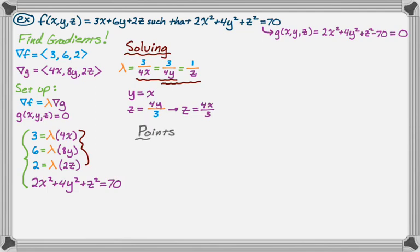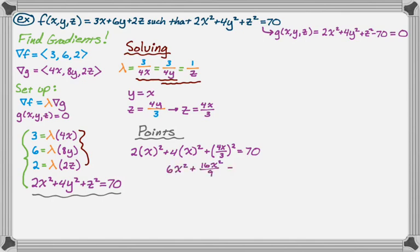Now I'm going to find my points. I have this constraint curve. It's 2x squared, and to deal with y I have 4x squared because y equals x. For z squared it's the quantity 4x over 3 squared. It's just substitution. All of this equals 70. So 2x squared and 4x squared is 6x squared, and then 16x squared over 9.